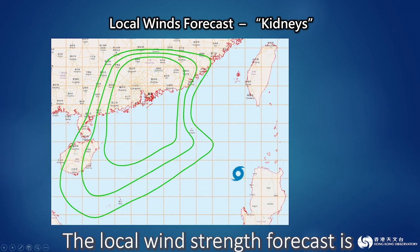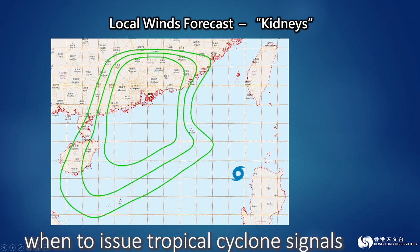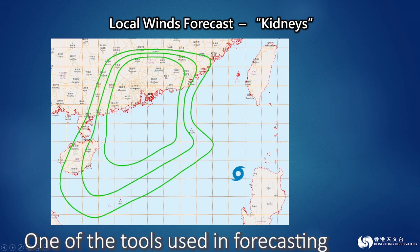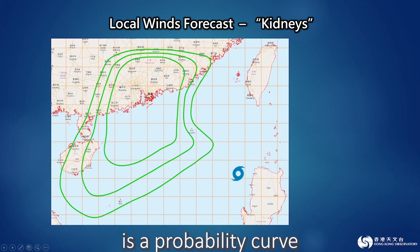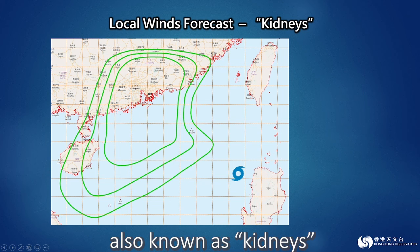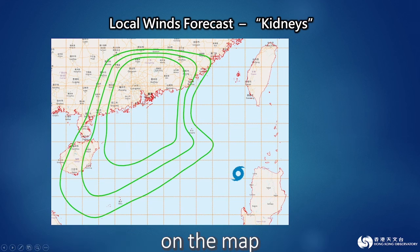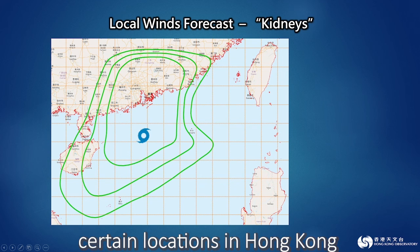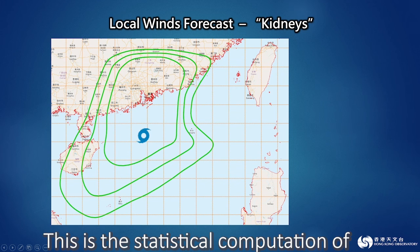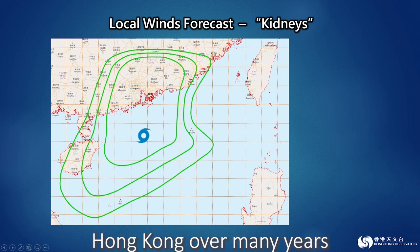The local wind strength forecast is a very important element in determining when to issue tropical cyclone signals. One of the tools used in forecasting the local wind strength is a probability curve, also known as kidneys. Simply put, it represents a specific area on the map. When a tropical cyclone enters the area, certain locations in Hong Kong will have high winds. This is the statistical computation of observation records of past tropical cyclones affecting Hong Kong over many years.